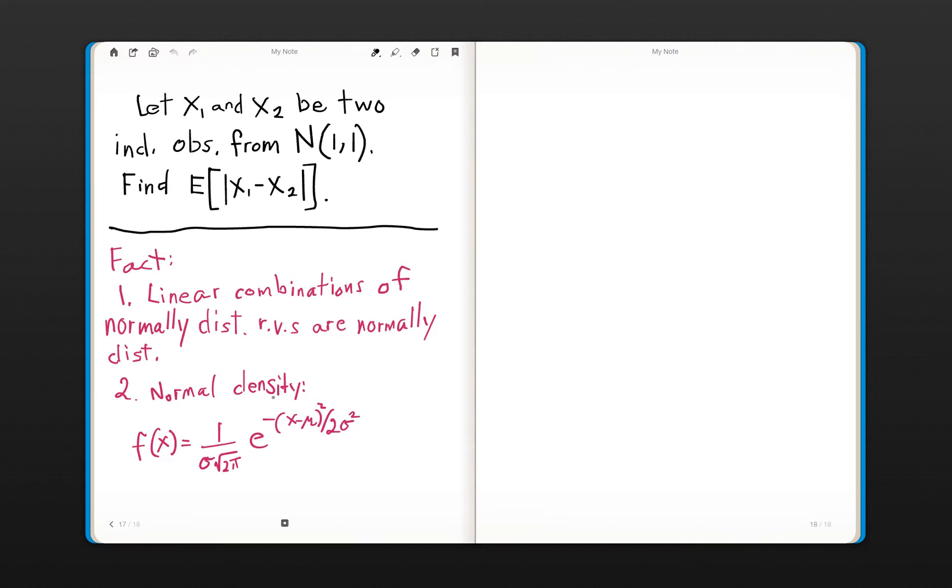Another fact we're going to use is the actual formula for the normal density. This is something good to have memorized and under your belt before you take the test, and that density is given here: 1 divided by sigma times the square root of 2 pi, times e to the negative (x minus mu) quantity squared over 2 sigma squared.